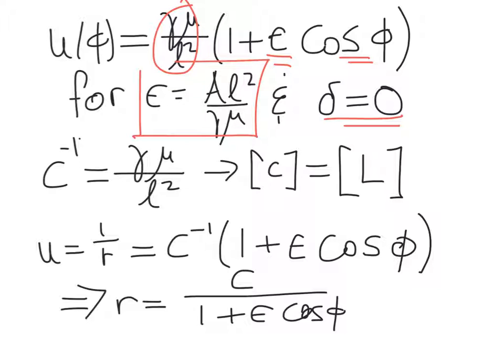So basically we can choose to measure our angle phi, the angle of revolution for our system, with respect to any axis we like. So we may as well choose an axis where that initial value delta is 0. And so that means we get a simpler expression for u as a function of phi.